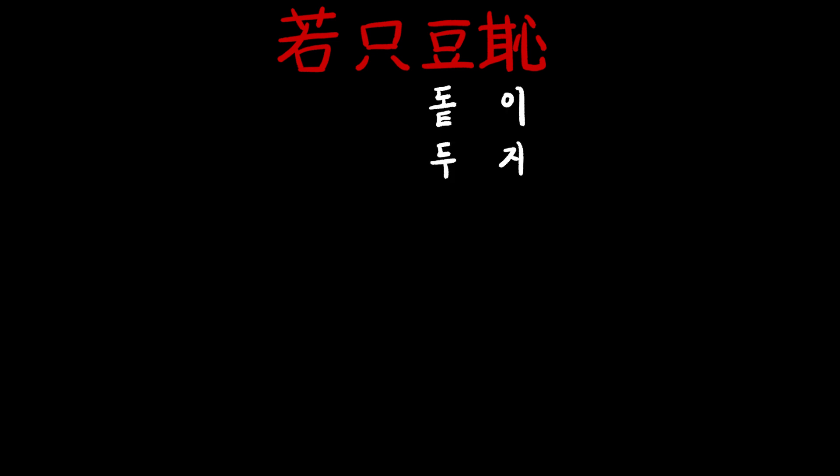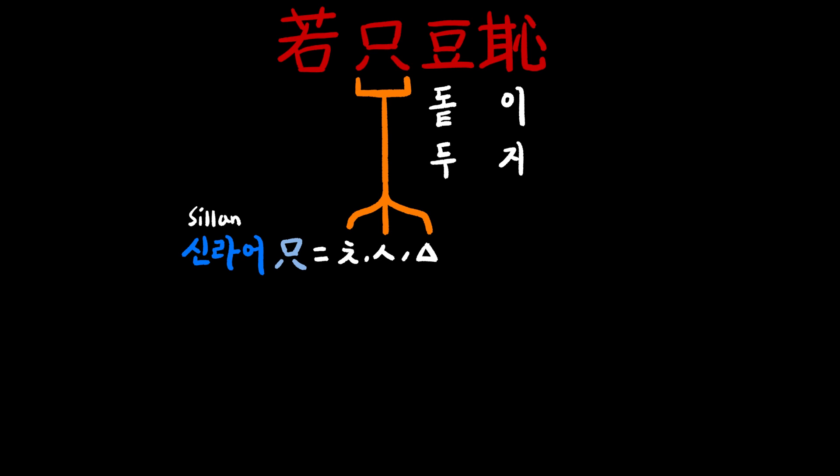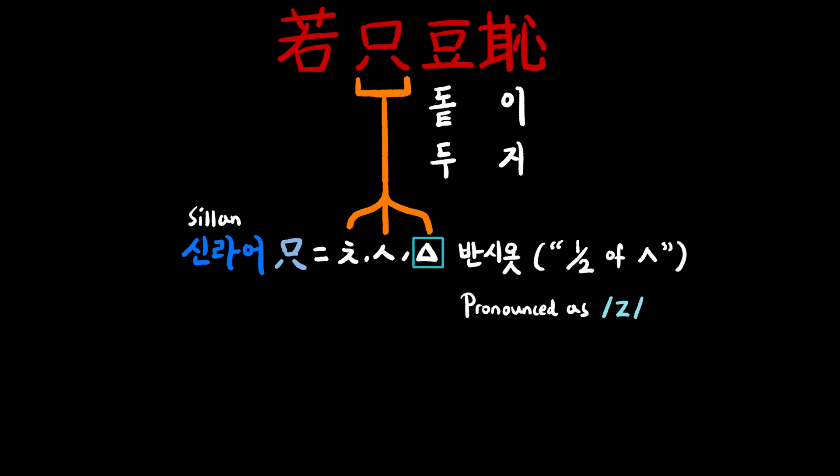So that was easy. Now let's take a look at the second word — this should be a no-brainer as well. In Silla language, this character was either pronounced S, J, or Z. This last triangle character in Hangul is called Banshiot, literally meaning a lightweight S sound or half S sound. It sounds like Z as in Zoo. This is now obsolete in modern Korean. Anyway, this character could have been pronounced as Si, Ji, or Chi on its own.